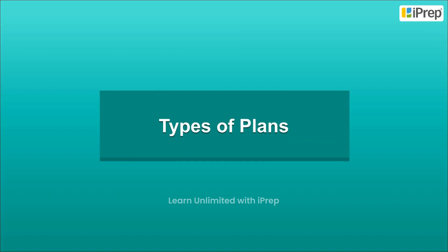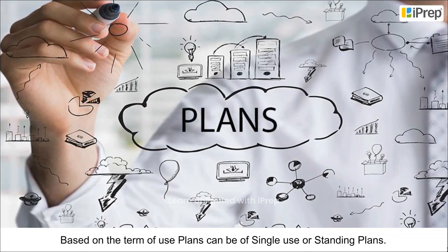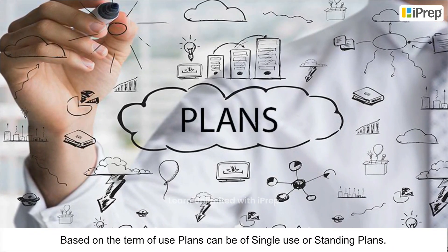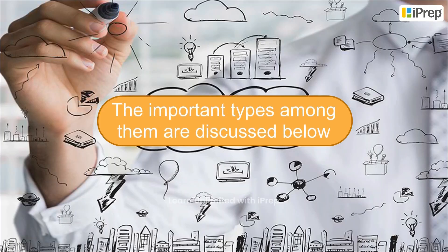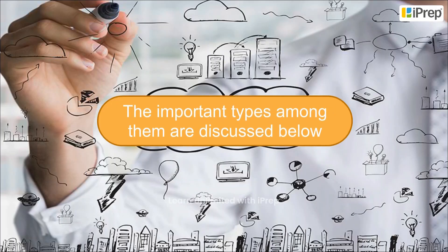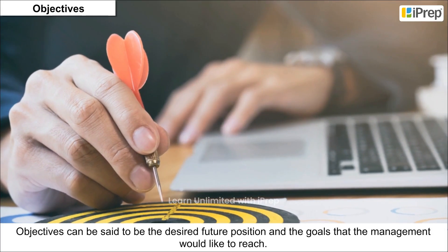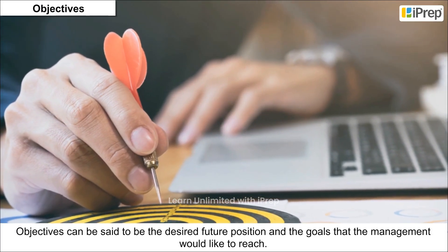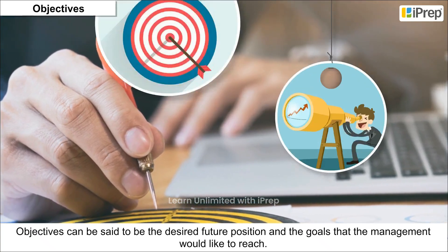Types of plans based on the term of use: plans can be single-use or standing plans. The important types among them are discussed below. Objectives can be said to be the desired future position and the goals that the management would like to reach.